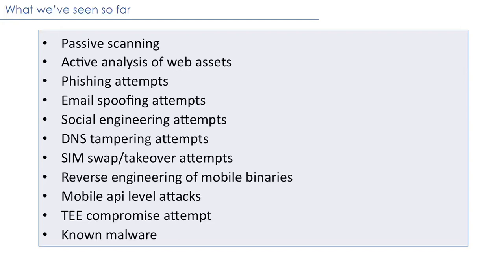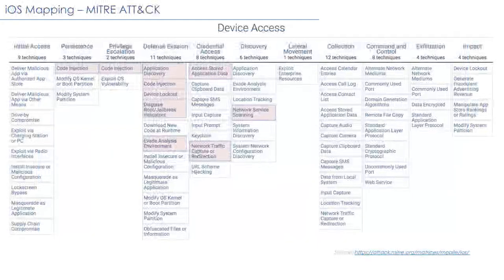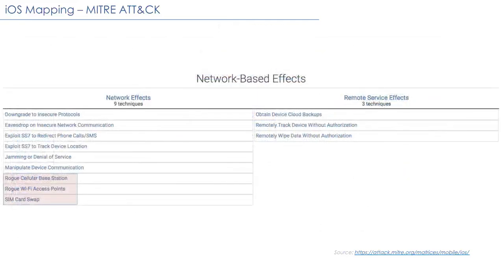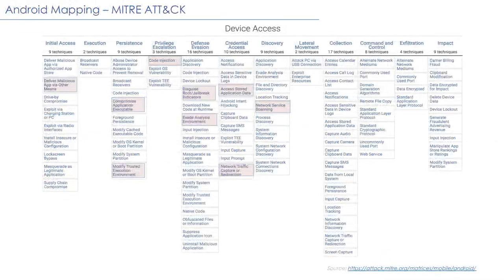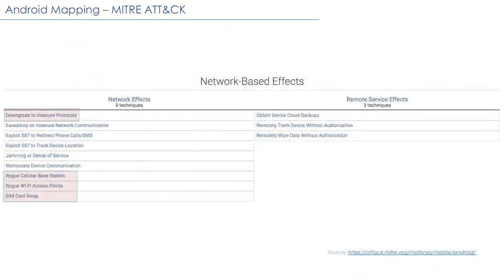Before diving into the data, it's useful to look at the MITRE ATT&CK framework. MITRE recently updated the mapping for not just the enterprise side — which covers our cloud aspects — but also the mobile side. We mapped our observed data to this framework. On iOS, there are some interesting things to note at the device level, as well as network-based vectors like SIM swap and rogue Wi-Fi. Similarly on Android, there are comparable but slightly different items. We find the mapping useful as we plan our work.